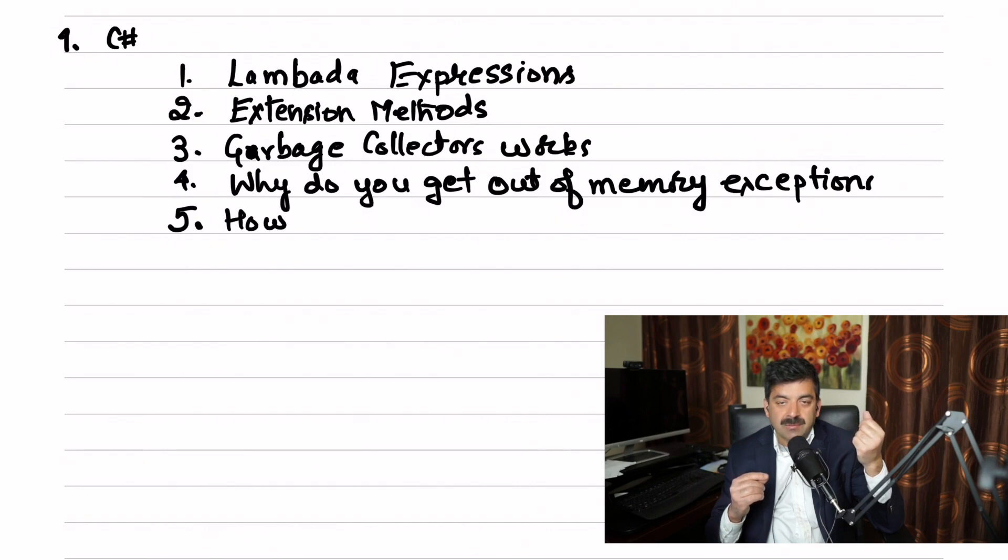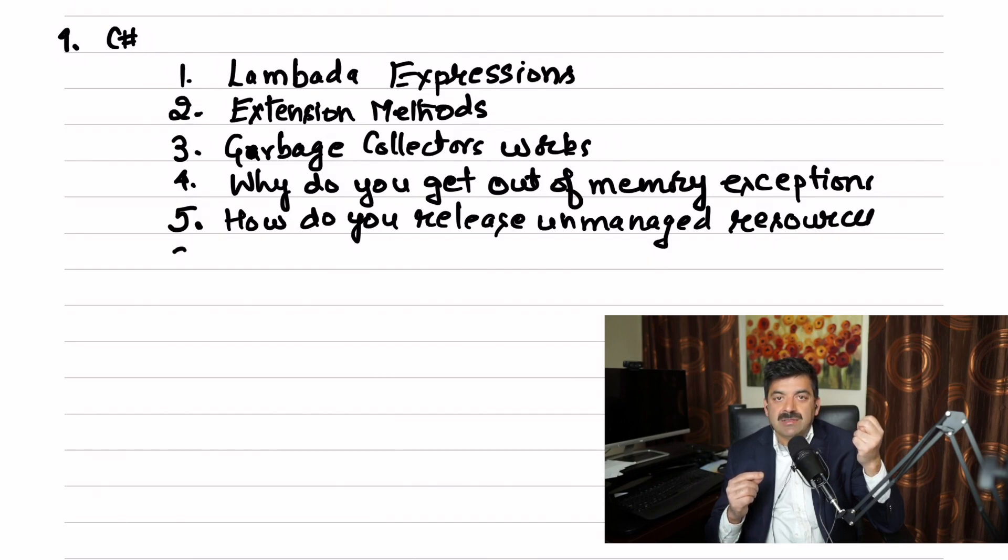What is the difference between by ref, by value? By ref sends the variables to the function using heap, whereas by value sends on the memory stack. String versus string builder. String is immutable, whereas string builder, you can append string to the same object. String builder is more memory efficient.